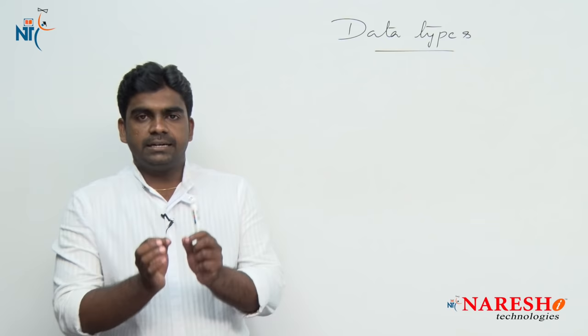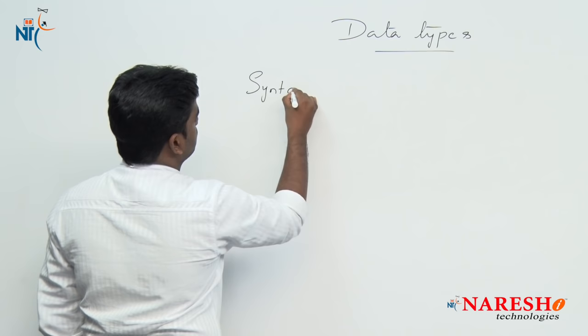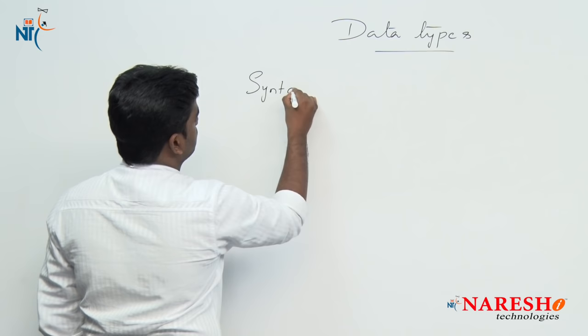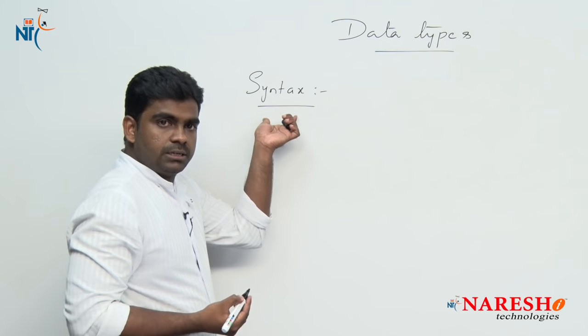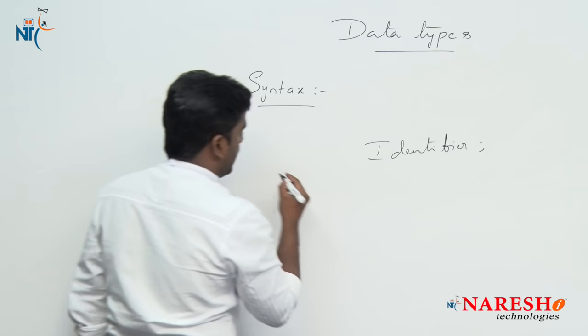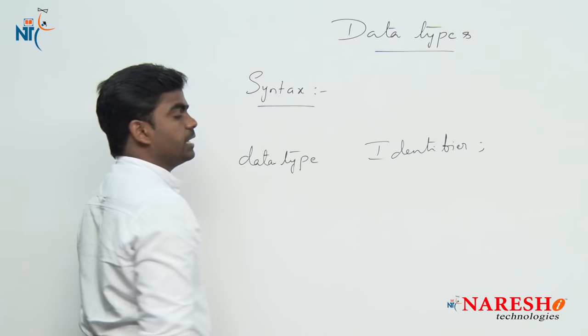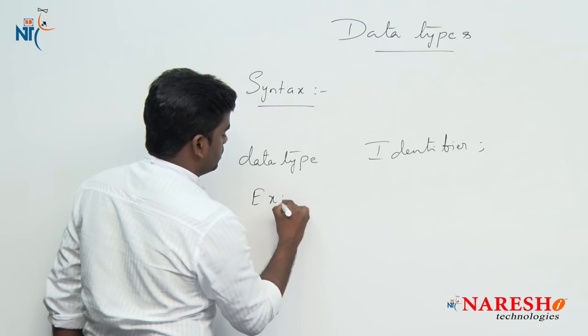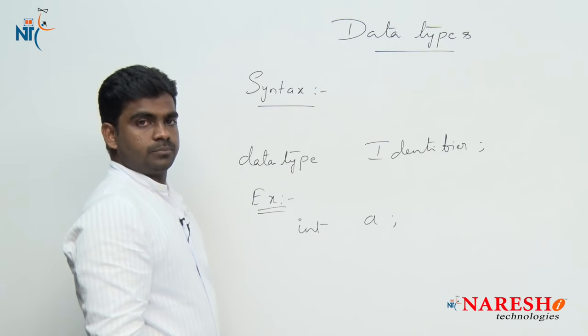First of all, what is a data type? In the declaration of every variable, it is mandatory to specify its data type. If you look at the syntax of a variable declaration, the data type and identifier are both important. For example, data type is integer and variable name is 'a'.